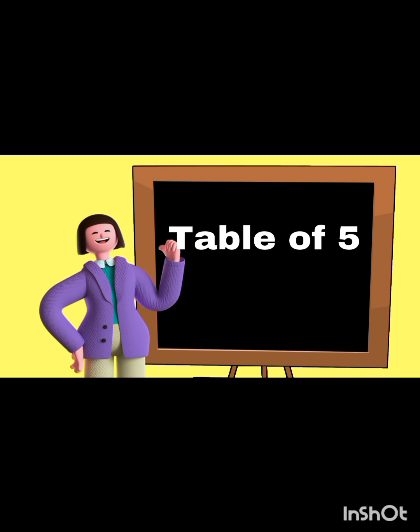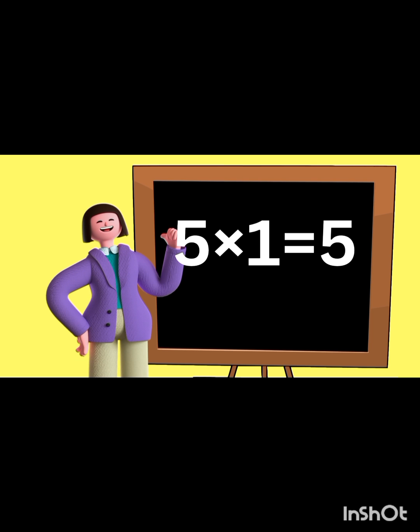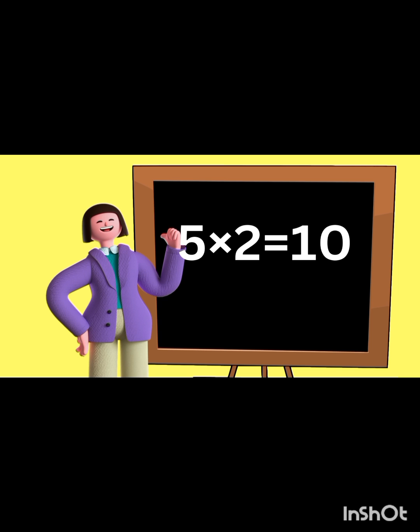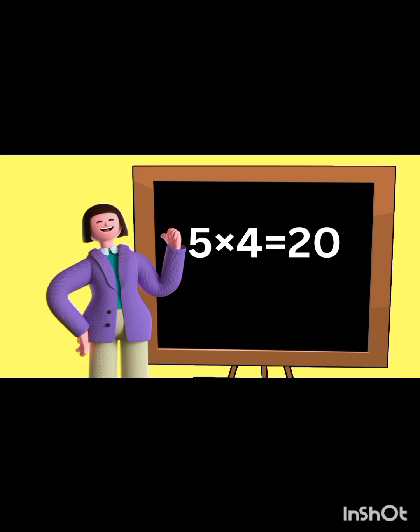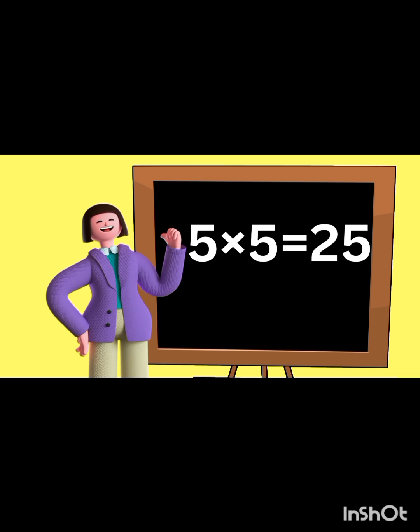Let's repeat it again — you have to repeat it with me. Ready? One, two, three. Five ones are five. Five ones are five. Five twos are 10. Five twos are 10. Five threes are 15. Five threes are 15.